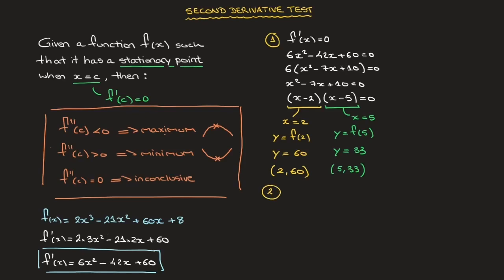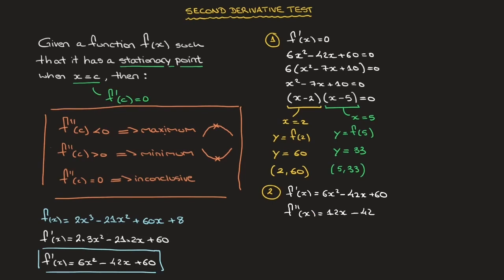We now move on to step 2: classifying each stationary point using the second derivative test. Starting from f'(x) = 6x² − 42x + 60 and differentiating again with respect to x, we obtain the second derivative f''(x) = 12x − 42. We evaluate this second derivative at each of the two stationary points.